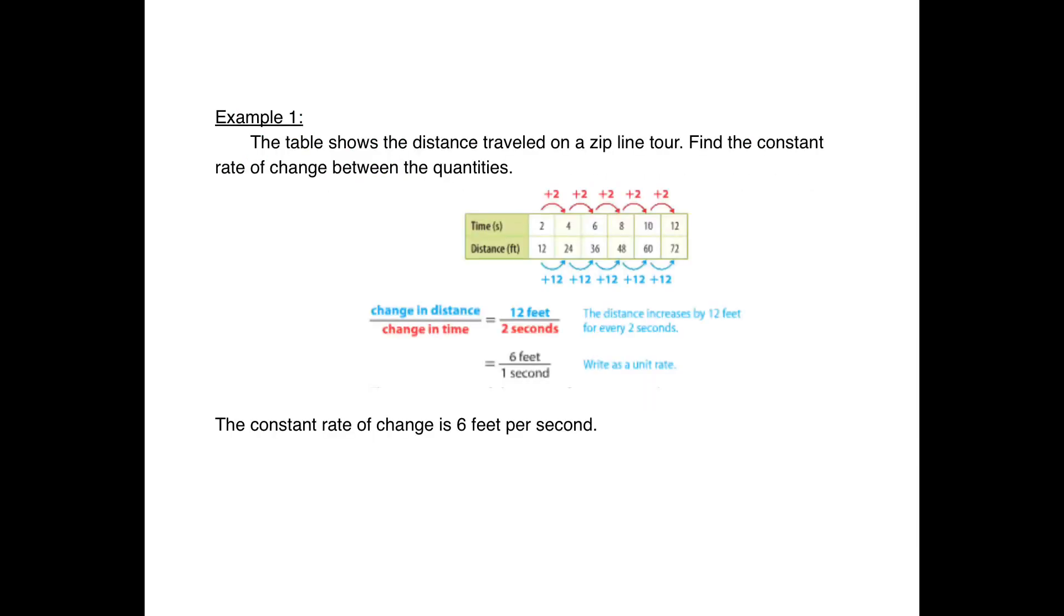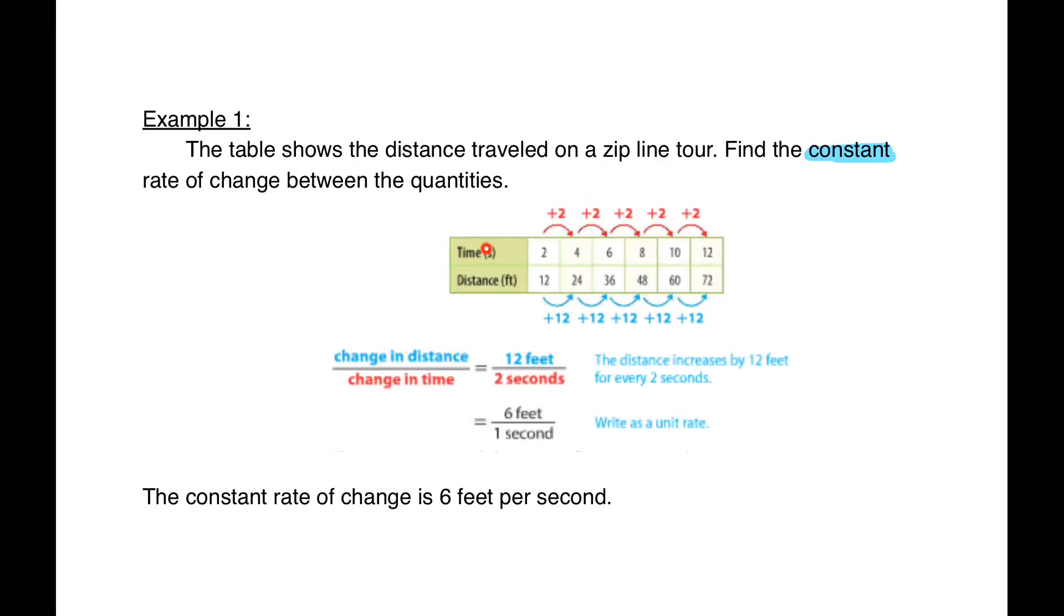Example one: The table shows the distance traveled on a zipline tour. Find the constant rate of change between the quantities. We've got our time and our distance. The distance is going to change as the time changes, so we'll put change in distance over change in time.